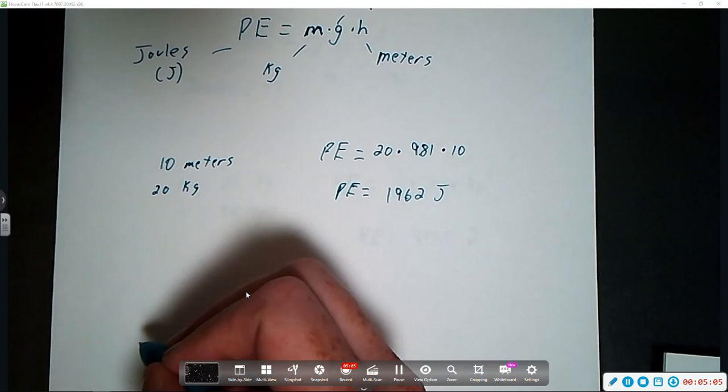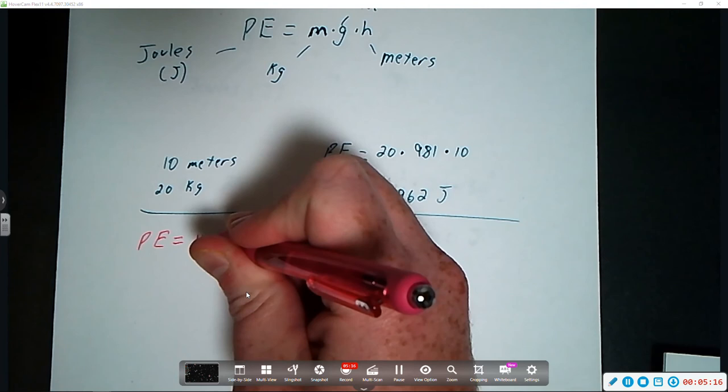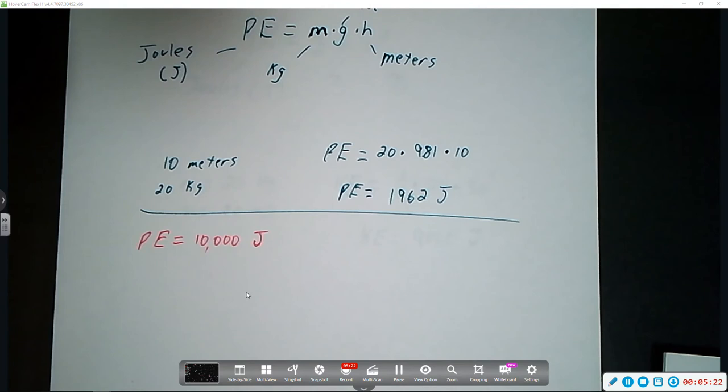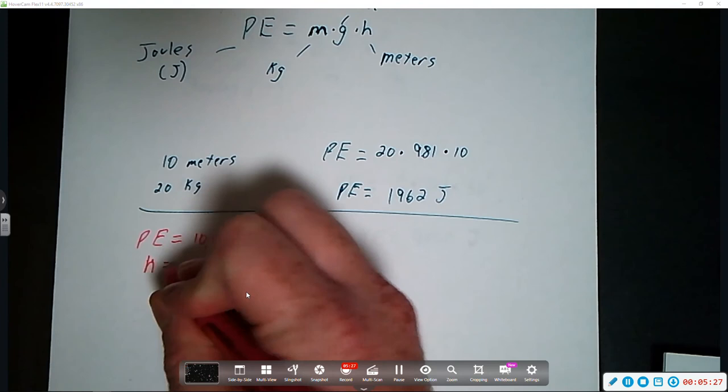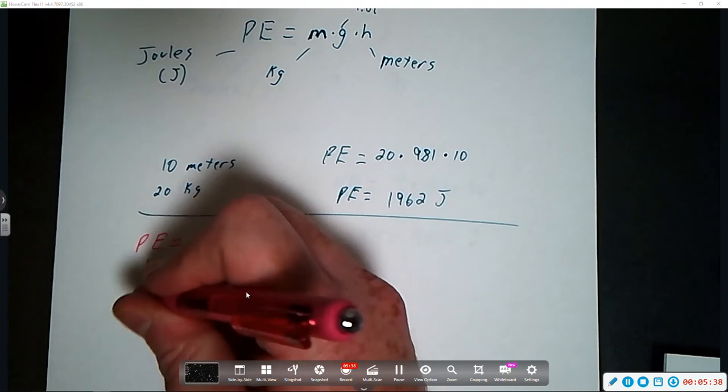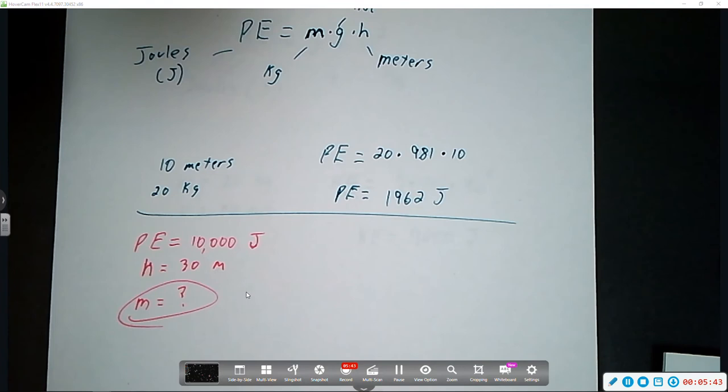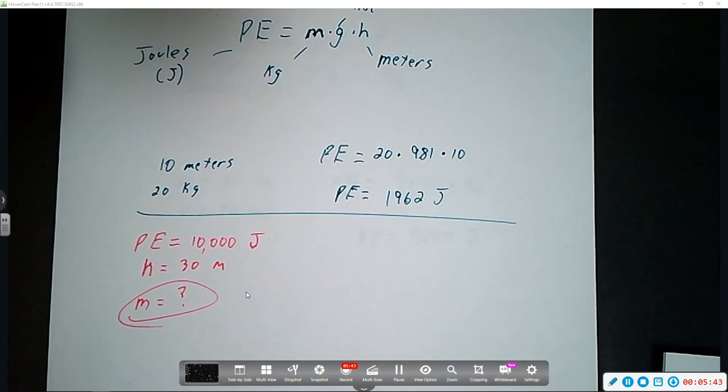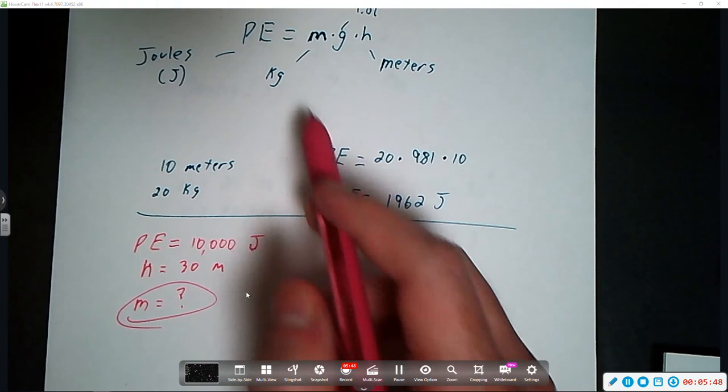So, let's say I am told that the potential energy of an object is 10,000 joules. And let's say that its height is 30 meters. So, what are we trying to solve for? The question would ask, then, what is the mass of this object? So, mass, we don't know. So, that is going to be our variable. So, let's plug what we do know into our potential energy equation.